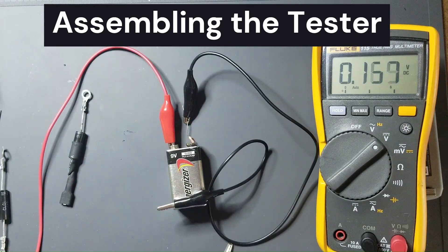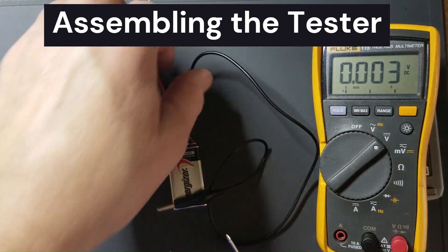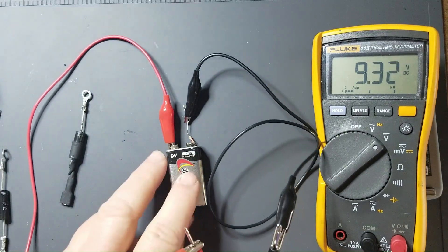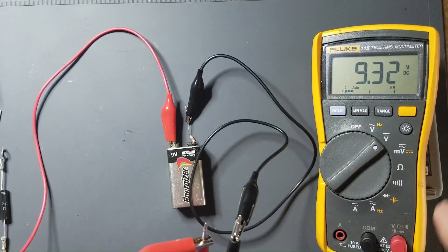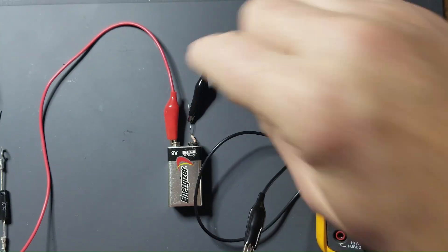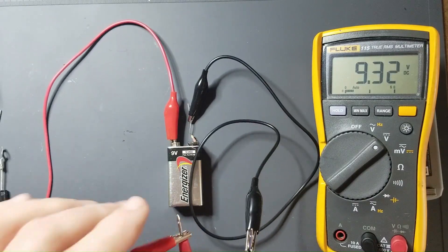Now when I hook this up to the multimeter the red lead goes to the red lead here, black lead goes to the black lead. We're going to measure the full voltage of the battery. That is because this multimeter doesn't put much of a load on this circuit and there's literally no voltage drop across that resistor until we start doing measurements.